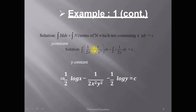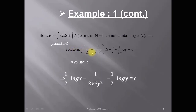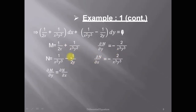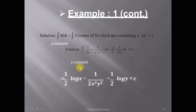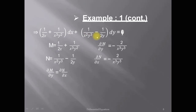We find the solution using: ∫M dx + ∫(terms of N not containing x) dy = c. The M function in the new equation is 1/(2x) + 1/(x³y²), and the only term in N not containing x is -1/(2y). Integrating: ∫(1/(2x))dx = (1/2)log x, and ∫1/(x³y²)dx = -1/(2x²y²). The integration of -1/(2y) with respect to y is -(1/2)log y. Therefore the solution is (1/2)log x - 1/(2x²y²) - (1/2)log y = c.